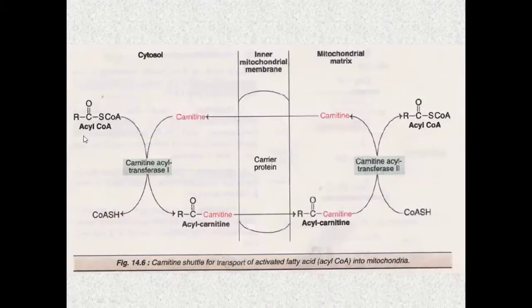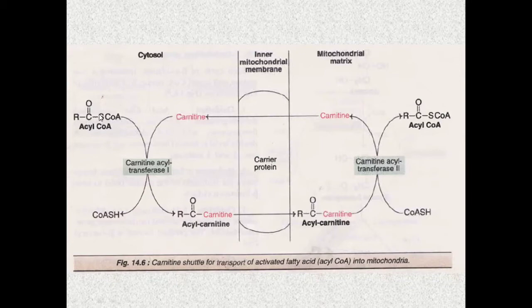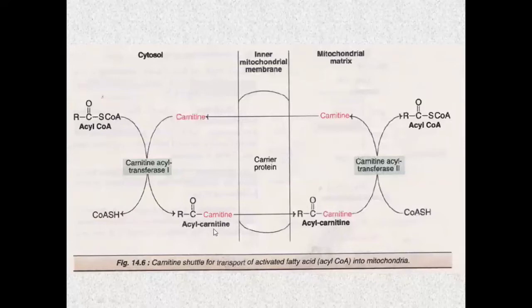So acyl-CoA, the activated form of fatty acid, is attached to coenzyme A at its carboxyl group. It will be attacked by carnitine, so the carnitine attaches to the acyl group and the coenzyme A will be released. In this way, the acyl group is transferred to carnitine, forming acyl-carnitine. This reaction — the transfer of the acyl group to carnitine — is catalyzed by the enzyme Carnitine Acyl Transferase 1 (CAT1).